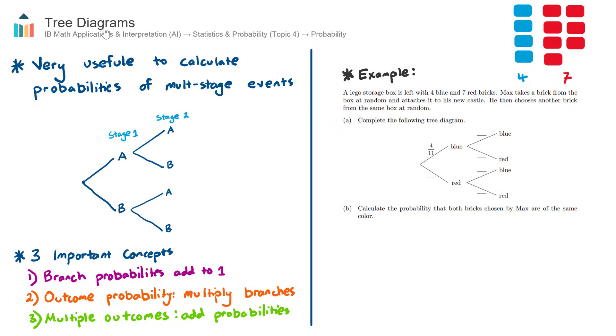In this video, we look at tree diagrams, which is found in the AI course under Topic 4, Statistics and Probability, under the subtopic of Probability.